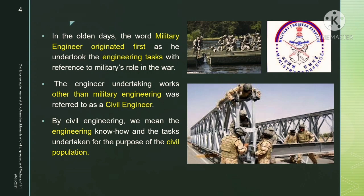Military people in all countries are the first engineers — they construct structures for protecting the people. To protect people inside the land, you have to protect your borders. For example, there was a border issue between India and China. The Chinese were constructing roads at the border, increasing their infrastructure facility. Similarly, India has to increase their infrastructure and lay roads for transporting commodities. Military people go to uncivilized places — dense jungle or icy areas — and create roads where there were none. They create the way, protect the land, and preserve it.